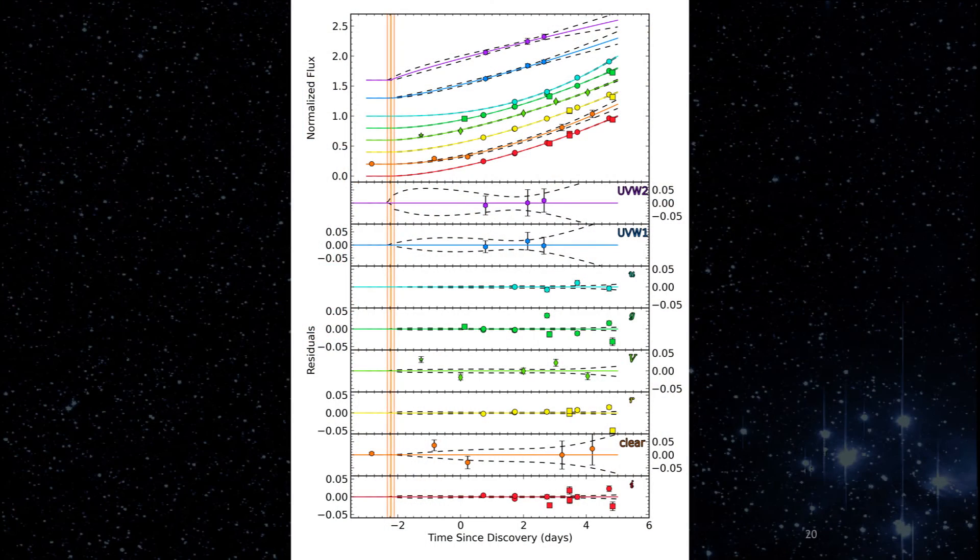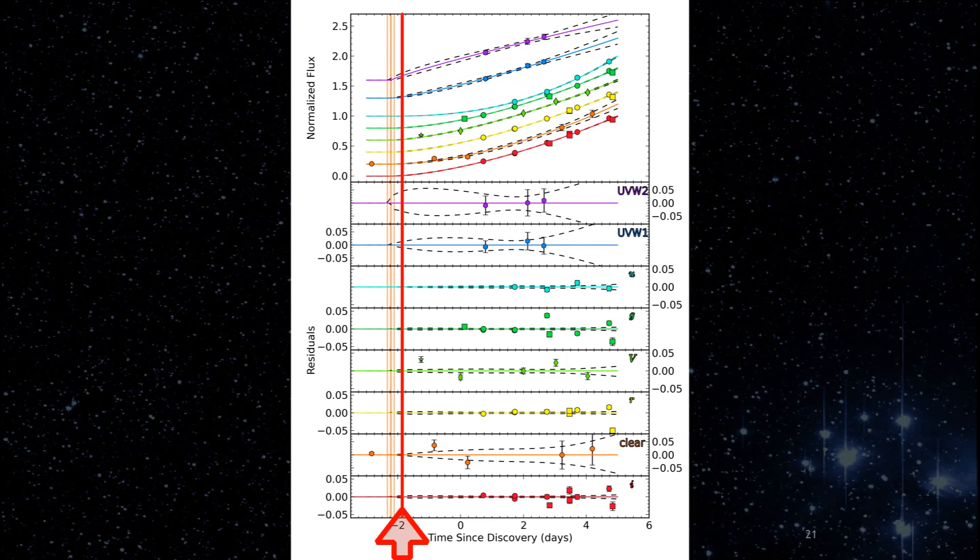To address this, we used our early time power law fits of ASSASSIN 14LP to determine that we would have been capable of detecting this supernova just 9.5 hours after first light. Thus, for bright, nearby supernovae, cadence is the limiting factor. Unless it is more rapid than every 10 hours, deeper surveys do not have an advantage over smaller aperture surveys. In addition, ASSASSIN has greater sky coverage than its larger aperture counterparts, which allows us to discover nearby supernovae over the entire sky.